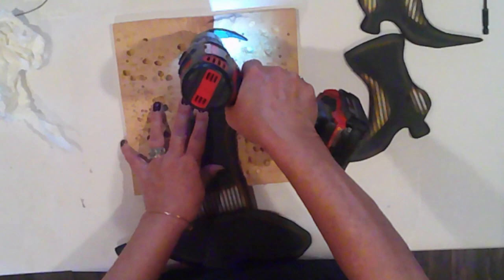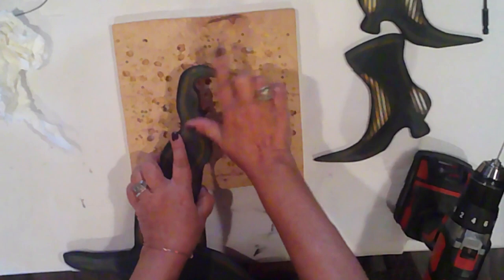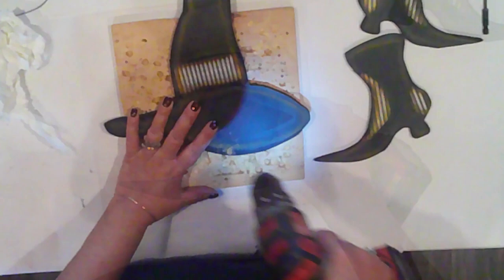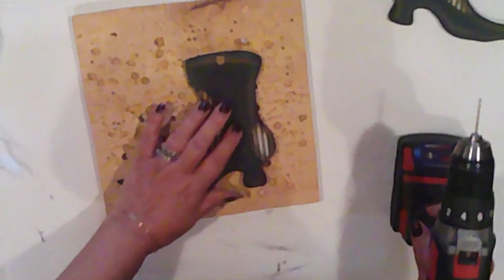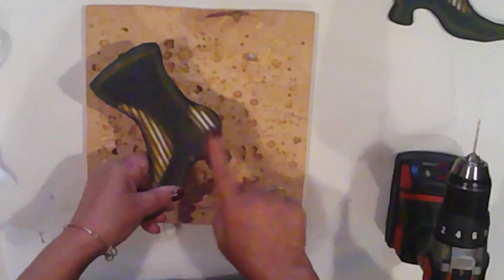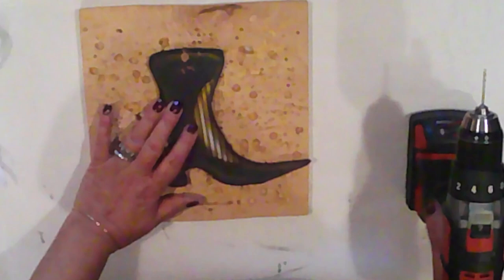And now I'll spray my pieces with clear matte sealer. I'll drill holes first at the top of the hat for the hanger, then the bottom and the boots so I can connect them to the hat. I'll drill four holes where the boot laces will go.